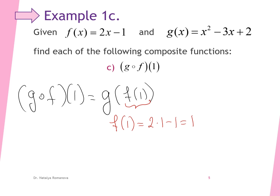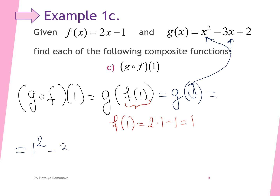Now we find the value of the outer function g at x equals 1. We plug 1 into g of x: 1 squared minus 3 times 1 plus 2 equals 1 minus 3 plus 2, which equals 0. So the value of the composition of g and f at x equals 1 is 0.